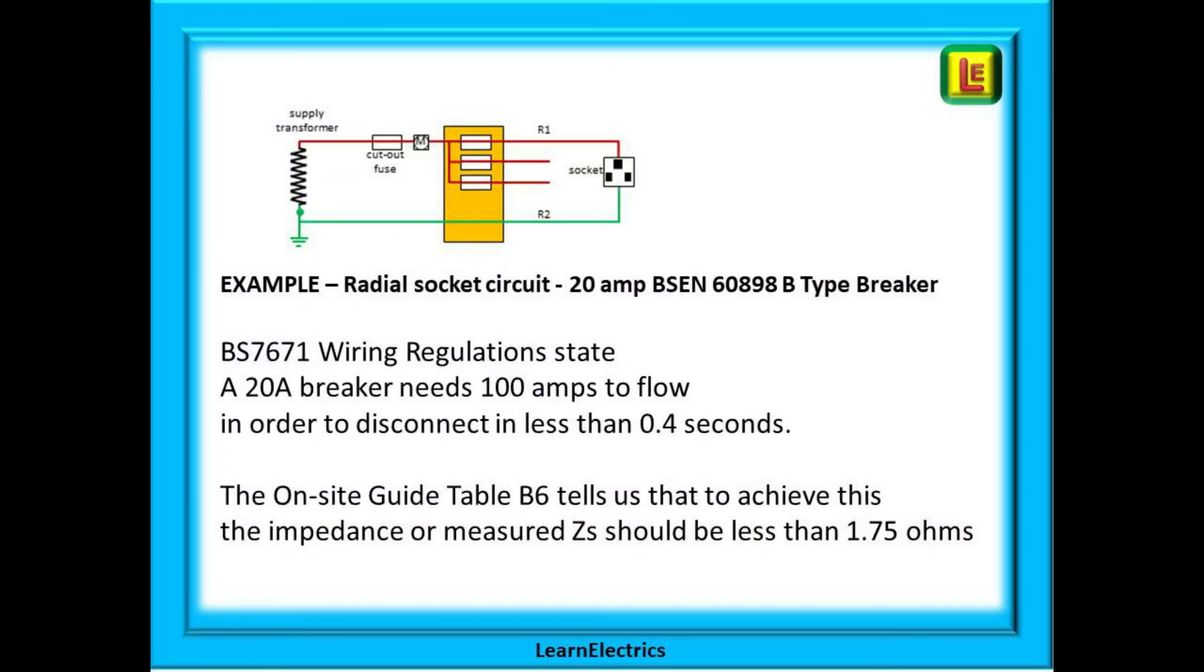In the UK our voltage is fixed at 230 volts AC and we use this value for all our calculations. Using our 20 amp radial socket circuit as an example, it is protected by a 20 amp B type MCB, and the wiring regulations tell us that this circuit would need to have at least 100 amps of fault current to flow in order to guarantee that the MCB will operate in 0.4 seconds or less.